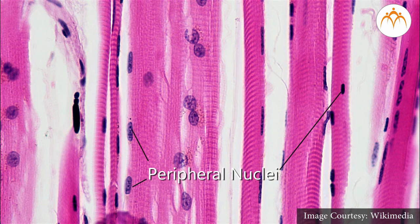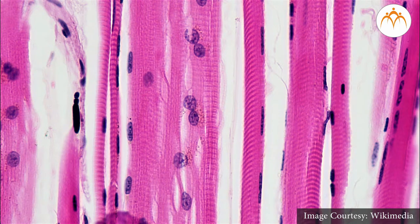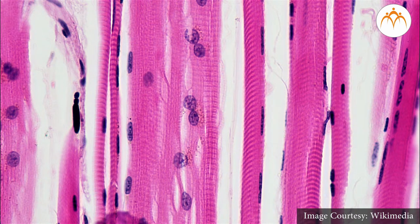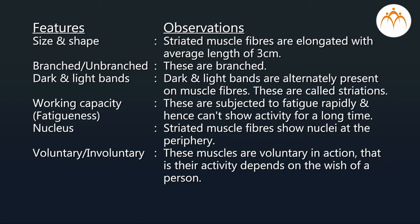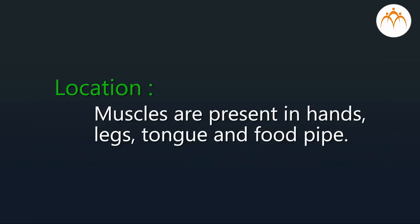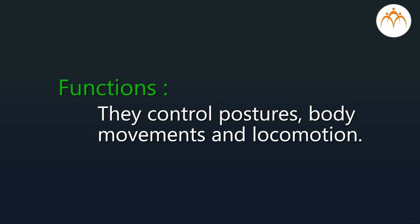Striated muscle fibers show many nuclei at the periphery. These muscles are voluntary in action, meaning their activity depends on the wish of a person. These muscles are present in the hands, legs, tongue, and food pipe. They control postures, bring about body movements, and locomotion.